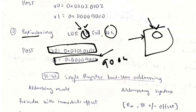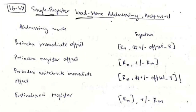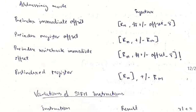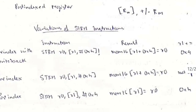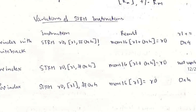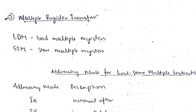Half-word load/store works similarly to full-word, but transfers only 8 or 16 bits instead of 32. The instructions use the same format, just applied to half the data size.